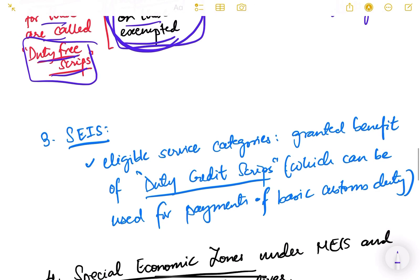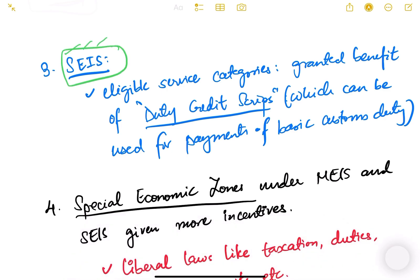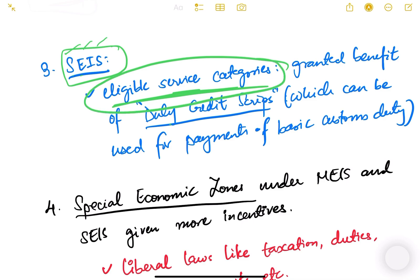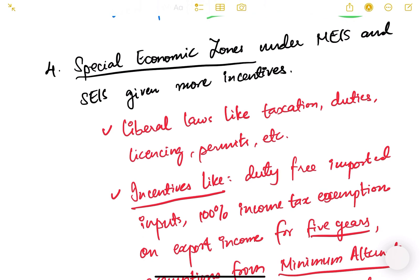Under SEIS, the Service Exports from India Scheme, service exports were previously not eligible for duty credit scrips. SEIS extended the benefit of duty credit scrips to the service sector as well, for eligible service categories. These scrips can be used for payment of basic customs duty.